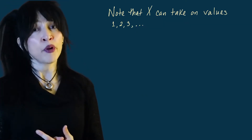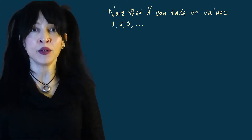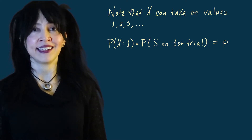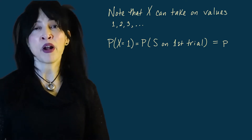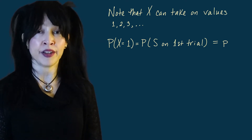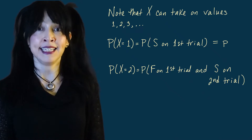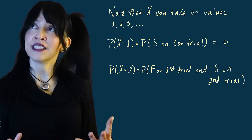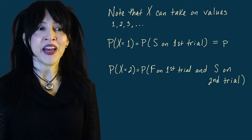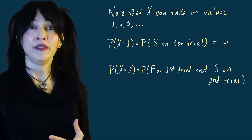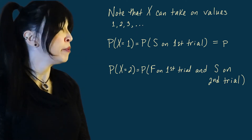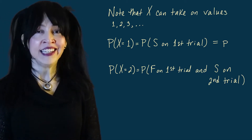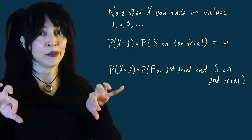Let's find the probability mass function. The probability that X equals one means you get success on the very first trial — that probability is little p by definition. The probability that X equals two means you get your first success on the second trial — you fail first and then succeed. So the probability that X equals two is the probability of failure on the first trial and success on the second trial, and because the trials are independent, we can break these apart.